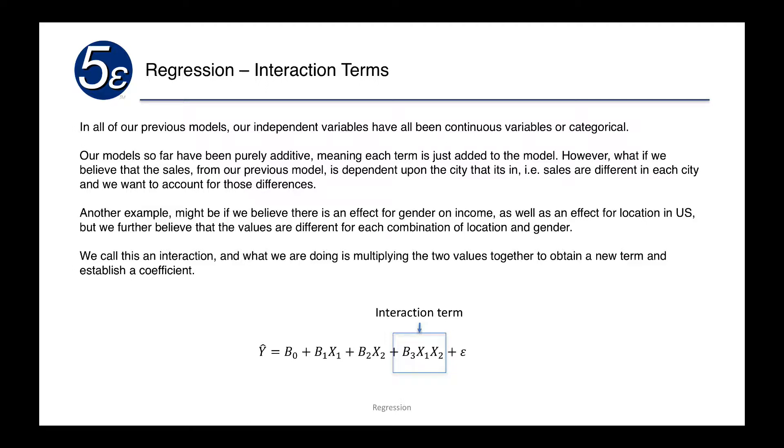What we're doing is we're multiplying the two values together to obtain a new term and establish a new coefficient. As we see in the model here, we have our b0 plus b1*x1 plus b2*x2, and then we're adding another term which is x1 times x2, and we're going to establish another coefficient b3 from it.